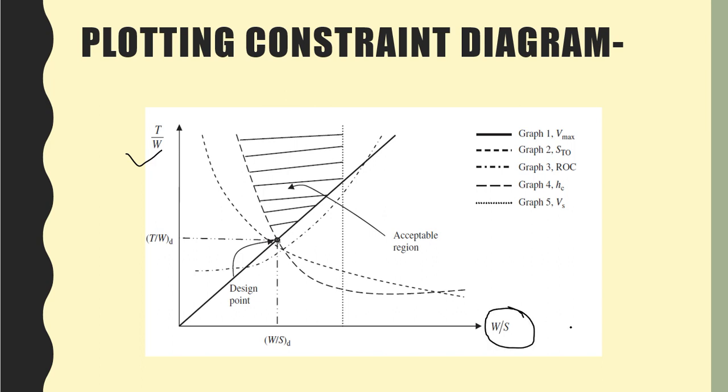After plotting, we have several graphs on this thing. So what are these? The first line tells you the curve of Vmax, that is the maximum velocity constraint that you have for your plane. Then you have the STO - this is the STO, which means the takeoff distance.